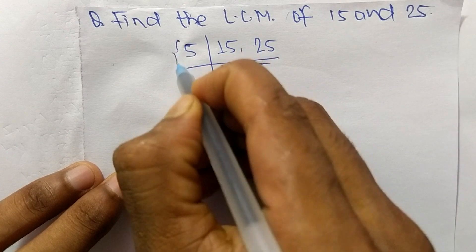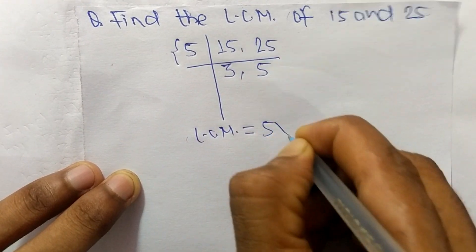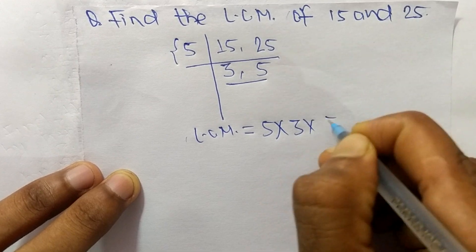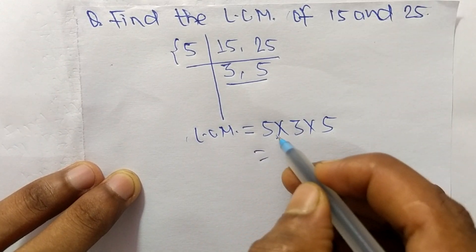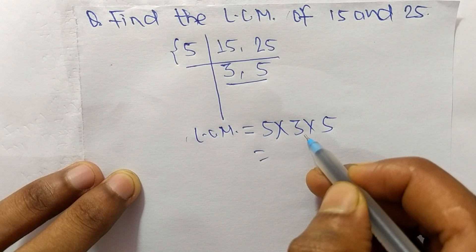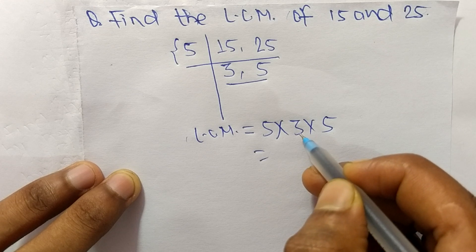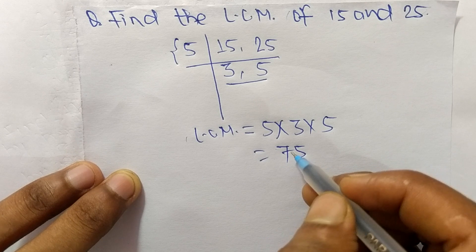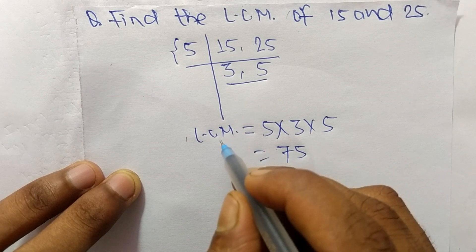...is equal to, from this part it is 5, and from this part it is 3 times 5. So 5 times 3 means 15, and 15 times 5 means 75. So 75 is the LCM of 15 and 25.